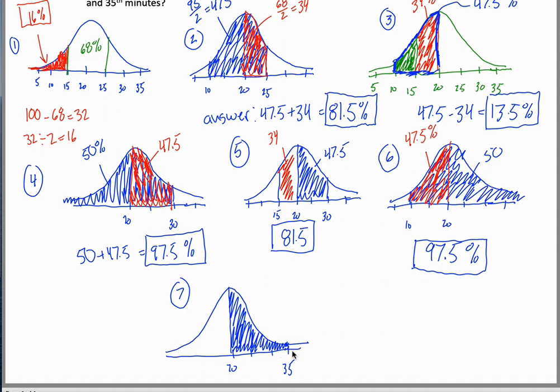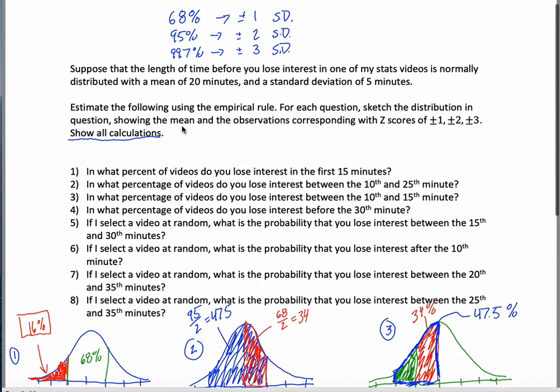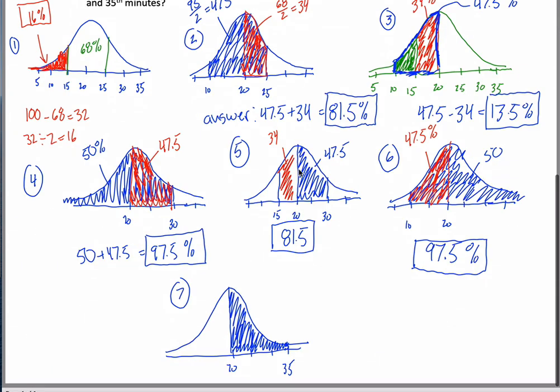So how much area is there here? Well, if it went from 5 to 35, it doesn't. But if it went from 5 to 35, I'd be talking about three standard deviations below to three standard deviations above. And my empirical rule tells me that that captures 99.7% of data. So what does that tell me? It tells me that this is half of that. 99.7% divided by 2 ends up getting you 49.85%. That would be the answer to number 7.